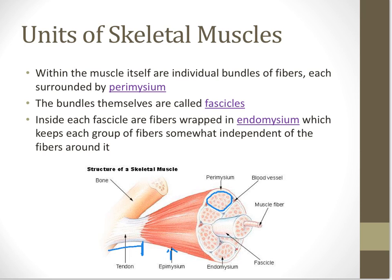Each of those individual bundles is called a fascicle. In the diagram, we can see 7 or 8 different fascicles in this one muscle bundle. Inside of each fascicle, we have smaller fibers. Around each of those smaller fibers is another connective tissue layer called the endomycium. The names tell you where you can find them — endo means in, epi means around. Each of those connective tissue layers allows the muscle bundles to work somewhat independently.